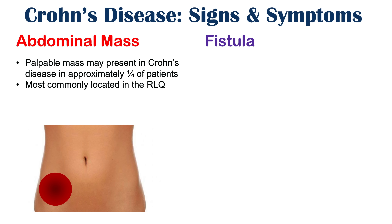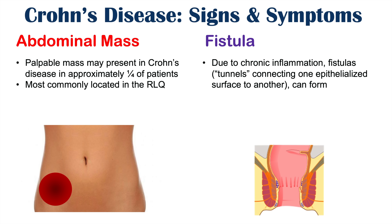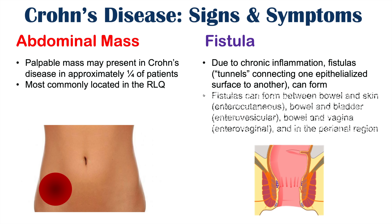Fistulas can also occur in Crohn's disease patients. A fistula is a tunnel connecting one epithelialized surface to another, caused by chronic inflammation. These fistulas can form in many different places: between the bowel and skin (enterocutaneous), between the bowel and bladder (enterovesicular), between the bowel and vagina (enterovaginal), and in the perianal region. These are significant complications of Crohn's disease, connecting the chronically inflamed bowel to other epithelialized surfaces.